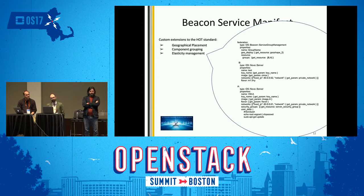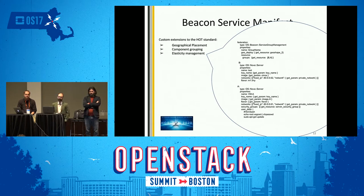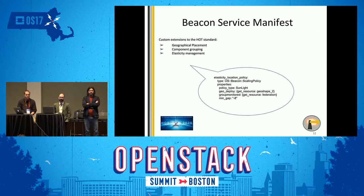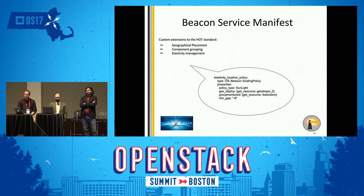The second important element is the component grouping functionality provided by the resource OS::Beacon::ServiceGroupManagement. This resource has two important property fields: the geodeploy link to the previously described resource, and the group element, which is the list of resources contained inside the stack. The last element related to elasticity management is the resource OS::Beacon::ScalingPolicy, composed of three main elements: the policy type, the link to the geographical area, and the group monitor link to the service group management.